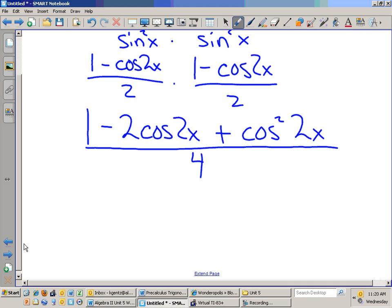So, if you look here, we have, if we divide this out, we have a 1 fourth, which is going to be just fine. We have a 2 cosine of 2x over 4, which is going to be just fine.